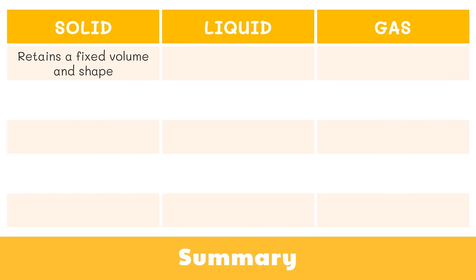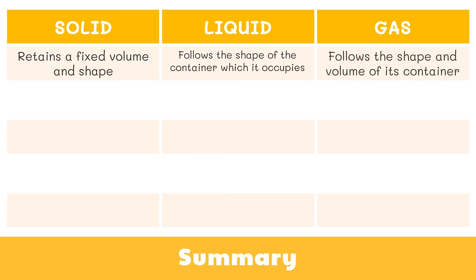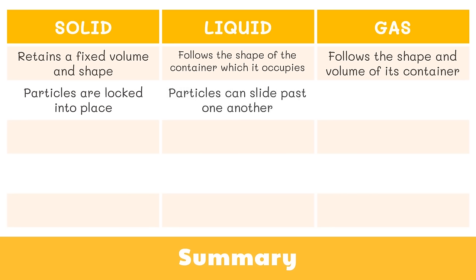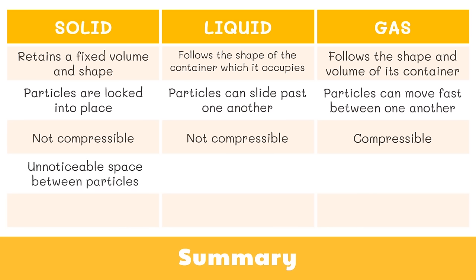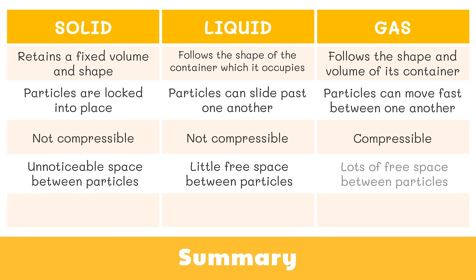Solids retain a fixed volume and shape. Liquids follow the shape of the container they occupy. Gases follow the shape and volume of their container. In solids, particles are locked into place. In liquids, particles can slide past one another. The particles in gas can move fast between one another. Solids and liquids are not compressible, while gases can be compressed. In solids, spaces between particles are unnoticeable. In liquids, there is little free space between particles. In gases, there is lots of free space between particles. Lastly, solids do not flow, while liquids and gases do.